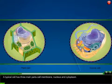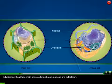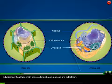A typical cell has three main parts: cell membrane, nucleus, and cytoplasm.